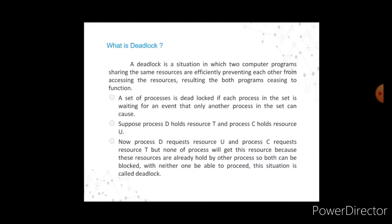Eventually, some operating systems offered dynamic allocation of resources, where programs could request further allocations after they had begun running. A set of processes is deadlocked if each process in the set is waiting for an event that only another process in the set can cause. Suppose process D holds resource T and process C holds resource U. Process D requests resource U and process C requests resource T, but neither can get its requested resource because they are held by the other. Both are blocked — this situation is called a deadlock.